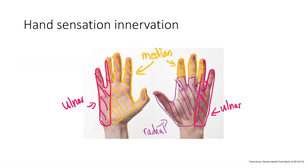For hand sensation innervation: remember that the radial nerve covers the dorsum of the hand — it's posterior innervation. The median nerve covers the first three fingers. The ulnar nerve covers the last two fingers. That's it for upper extremity nerve injuries and functions.